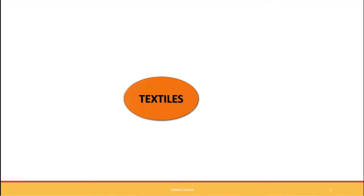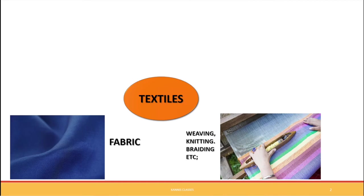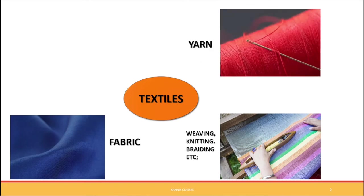What is textiles? Textiles collectively refer to the fabric that we use to make garments or dress. It is fabric that is not yet stitched. We get this fabric by the process of weaving, knitting, braiding, etc. In these processes, we take yarn or thread and interlace or interlock them, which gives a net-like structure that forms the fabric.